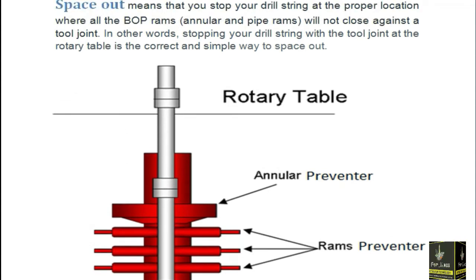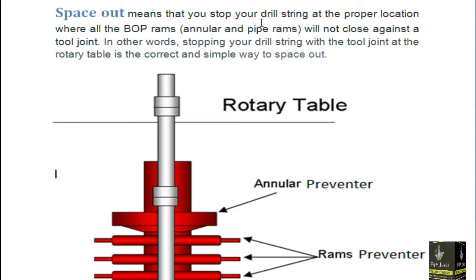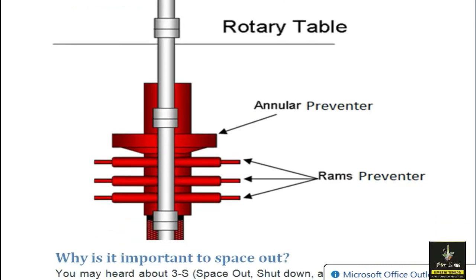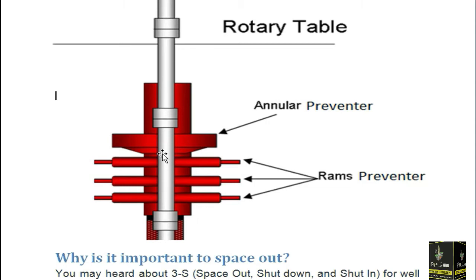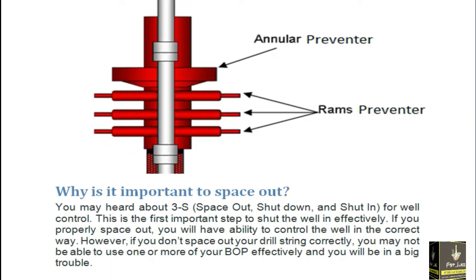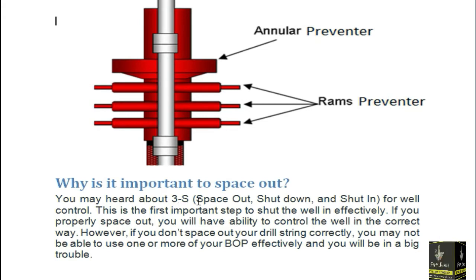Space out means to stop your drill string at a proper location where the BOP rams will not close against the tool joint. Here the BOP rams are closed and are not against the tool joint — they are in a proper space. If the BOP ram is against the tool joint, it will not close, creating a very big problem for well control. You may have heard about the three S's: space out, shutdown, and shut-in. This is the first important step to shut the well in effectively.